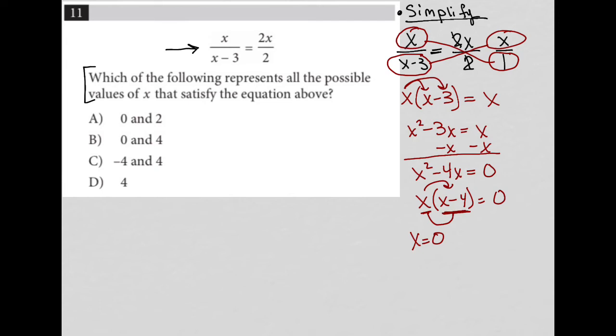Or my other option is that what's in the parentheses, the binomial x - 4 equals 0, and therefore x would be equal to 4. So those are my two solutions for x after completely simplifying the original equation that I started out with.